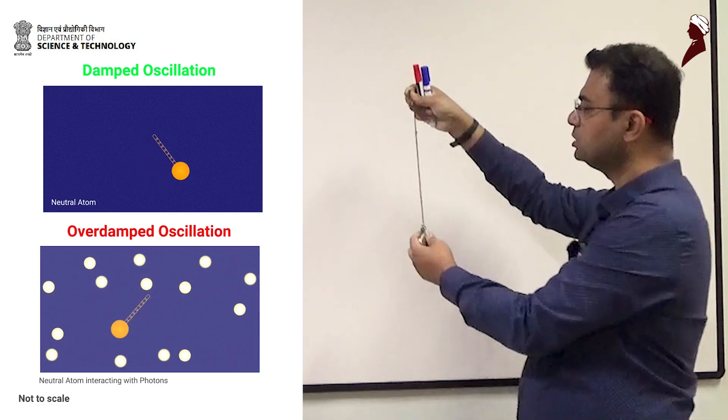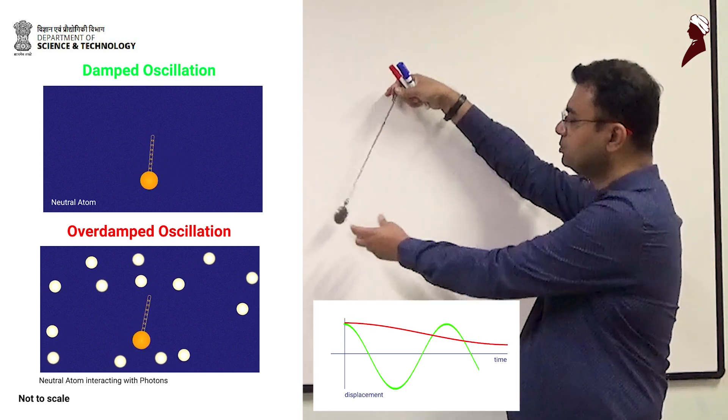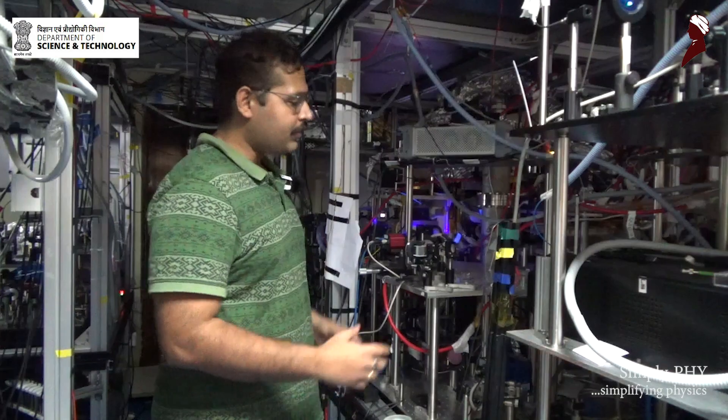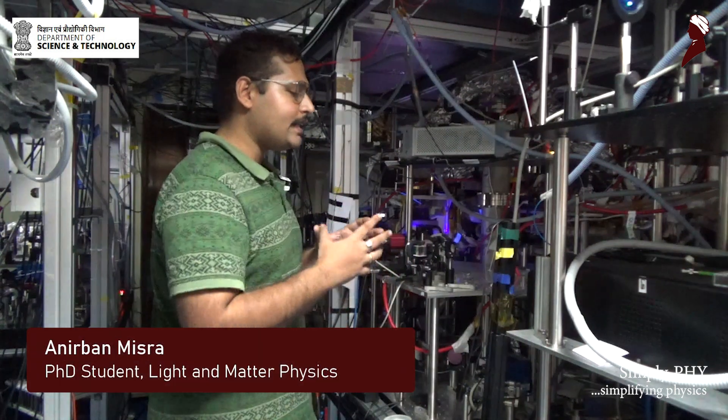But because of the interaction between atom and photon, this oscillatory motion is overdamped. After the atoms are trapped inside the vacuum in a magneto-optical trap...